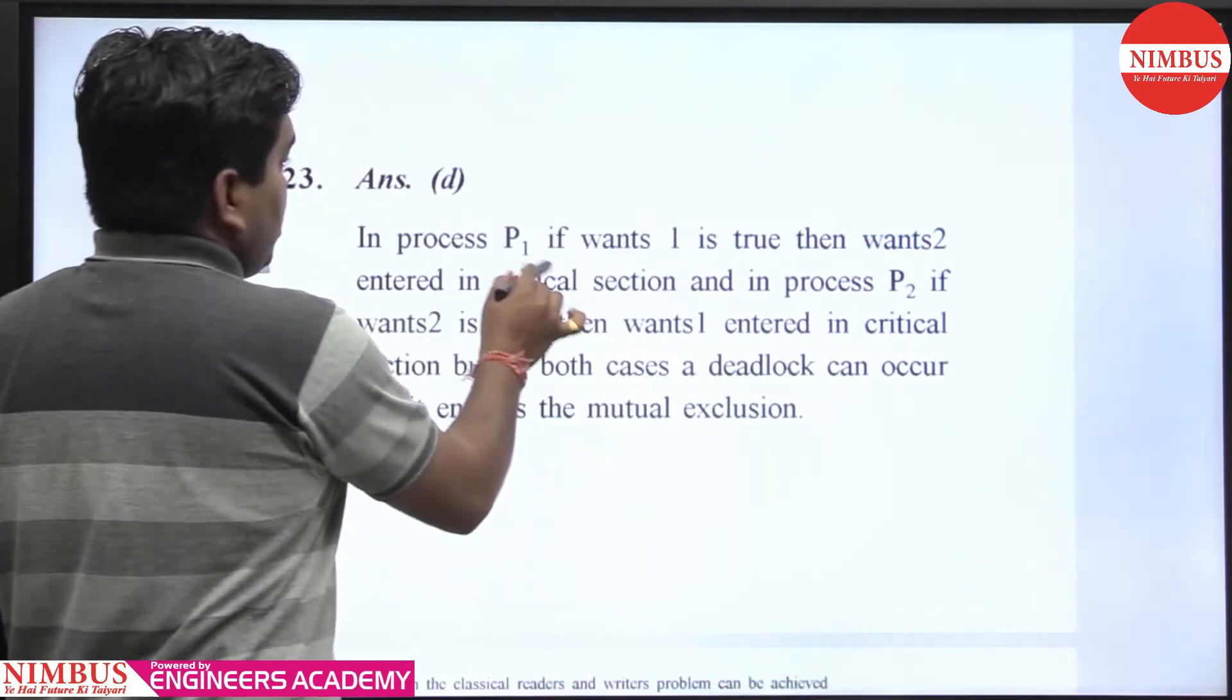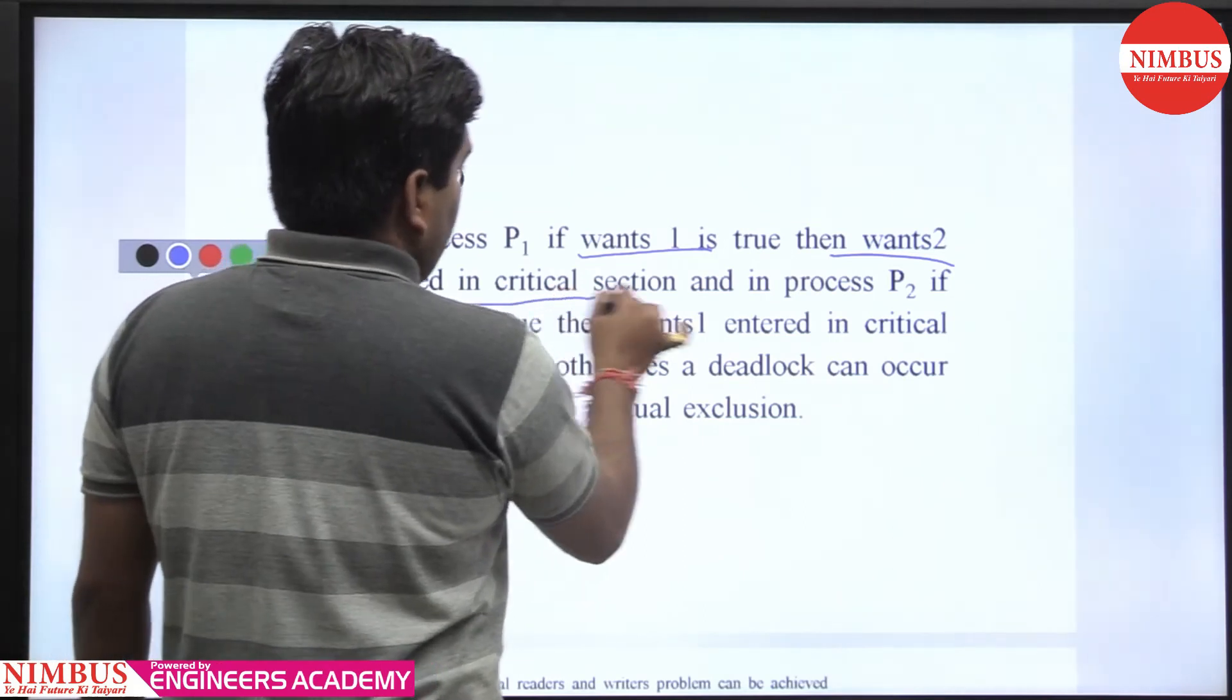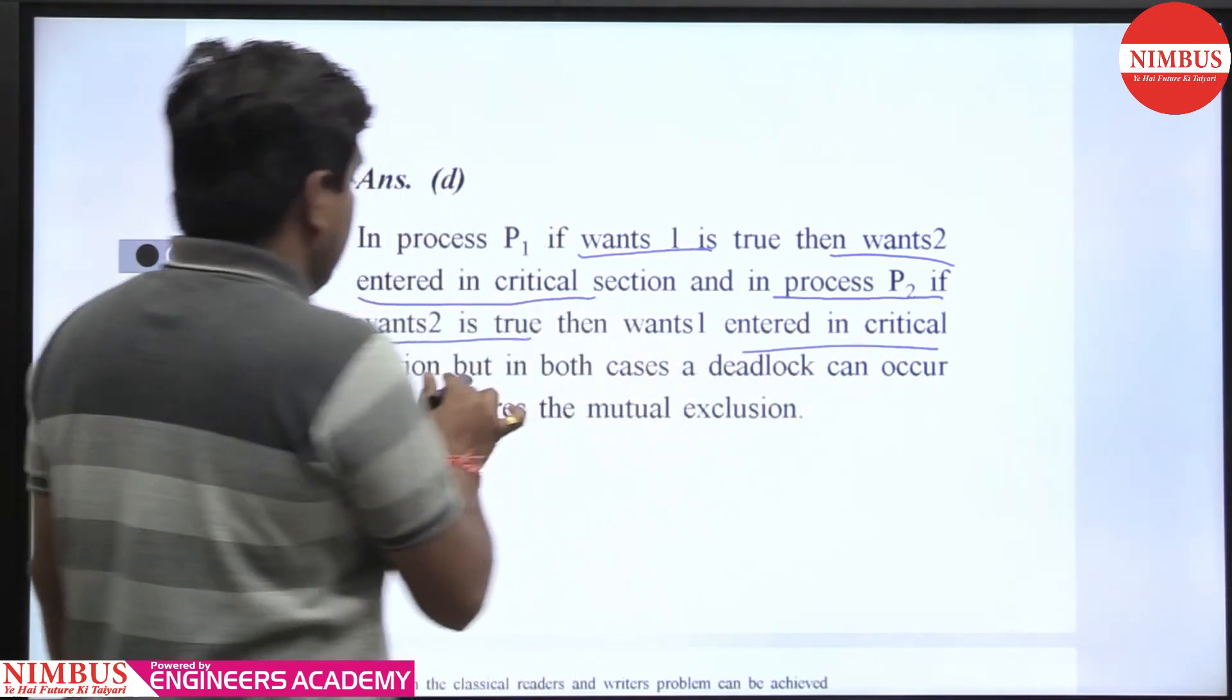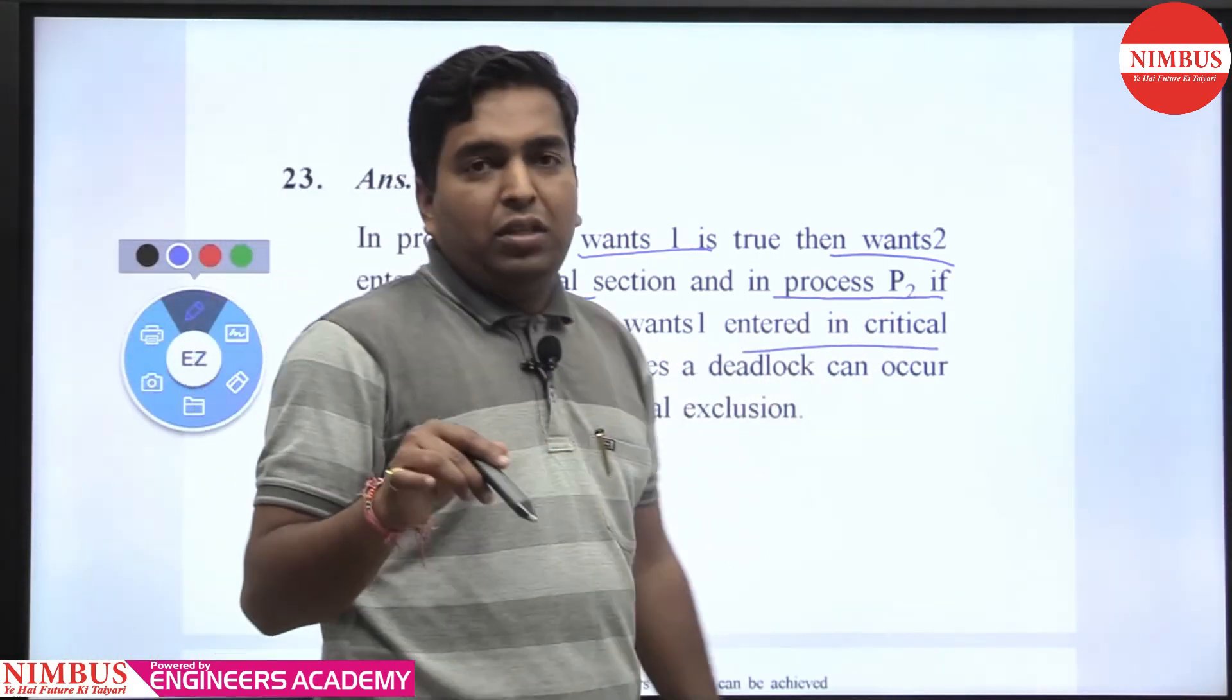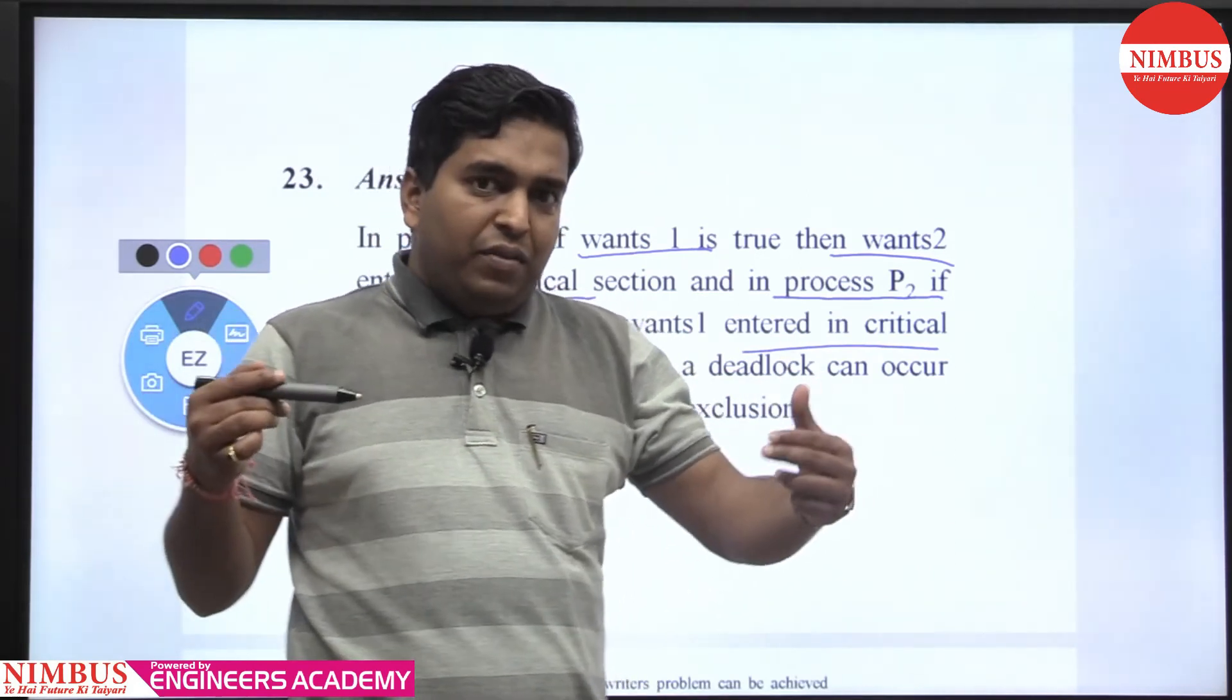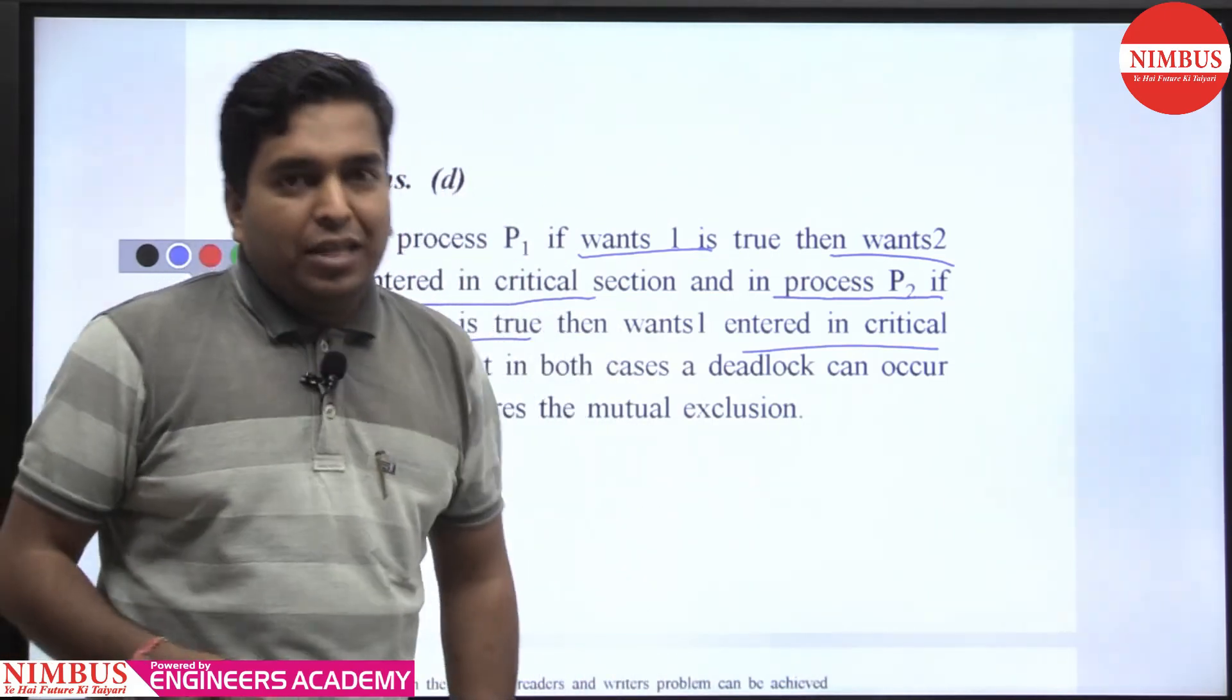So answer is D. If process P1, if wants1 is true, then P1 enters in the CS. But if both execute wants1 and wants2 concurrently, line number 1 and line number 2, then both are in deadlock. So D is the right answer. Thank you.